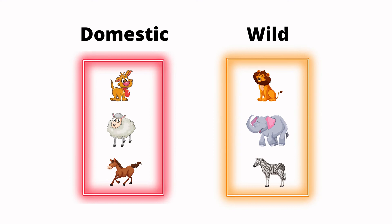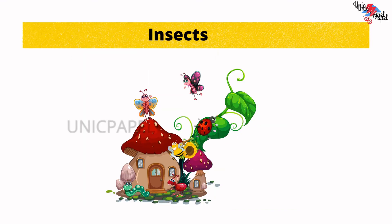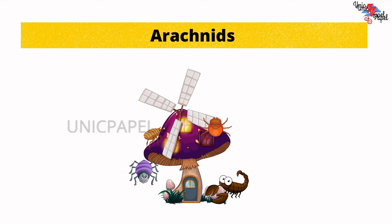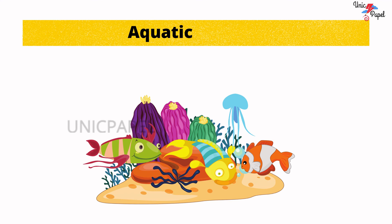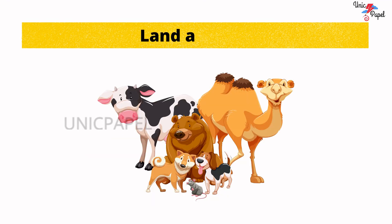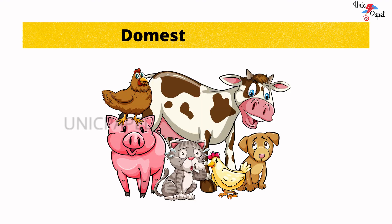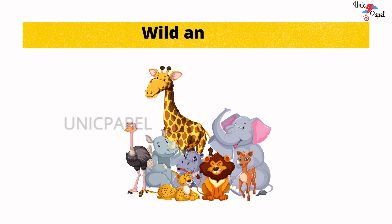Let's have a quick revision. Animals which have six legs are called insects. Animals which have eight legs are called arachnids. Animals which fly in air and have wings and feathers are called birds. Animals which live only in water are called aquatic animals. Animals which live only on land are called land animals. Animals which depend on humans for basic needs are called domestic animals. Animals which do not depend on humans for basic needs are called wild animals.